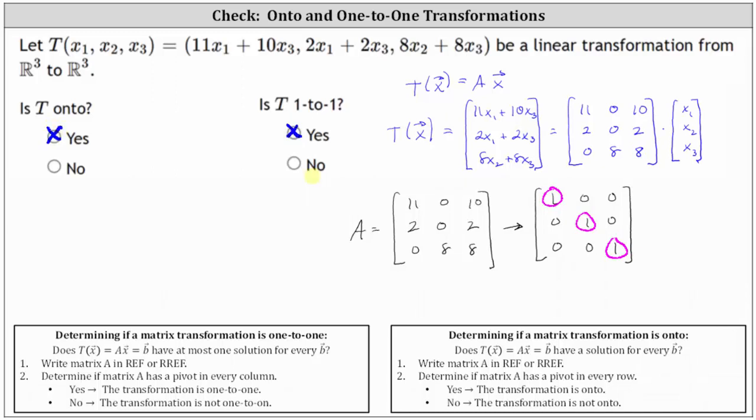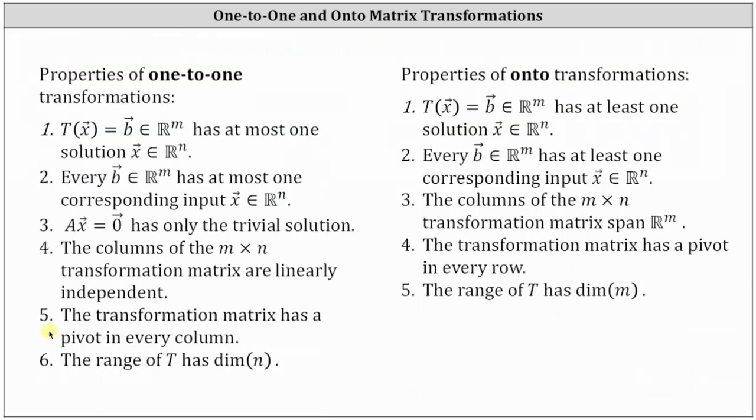Now that we know the transformation is one-to-one and onto, we know the properties on the left are true because the transformation is one-to-one. We also know the properties on the right are true because the transformation is onto. So you may want to pause the video and review these properties. I hope you found this helpful.